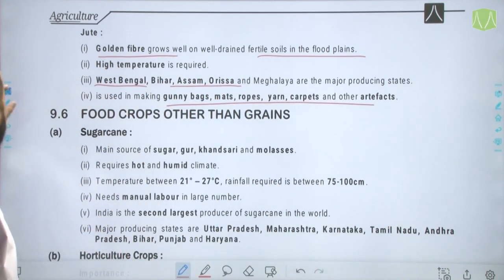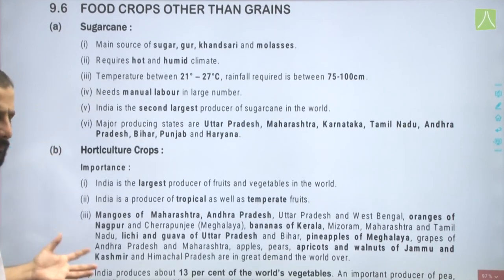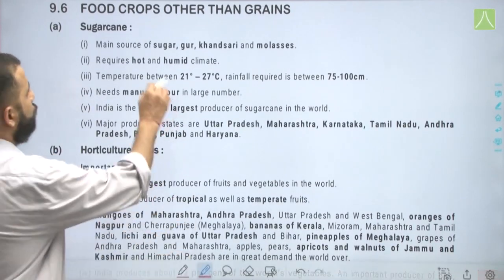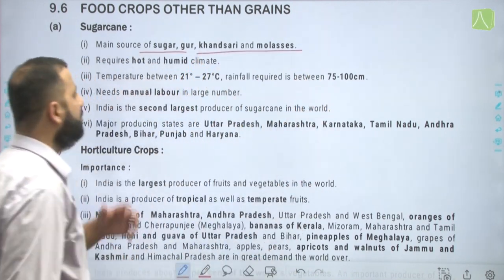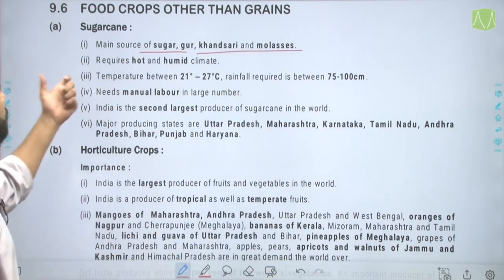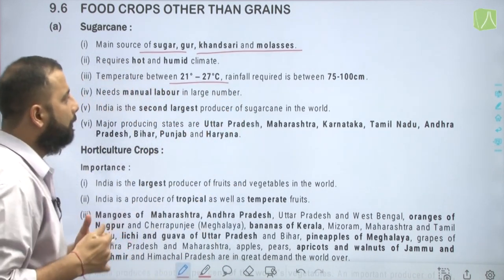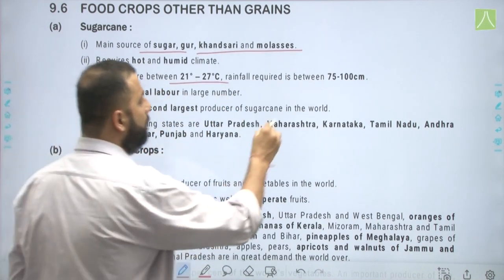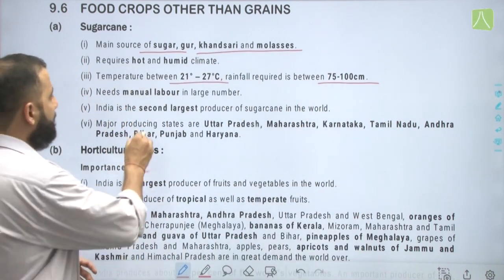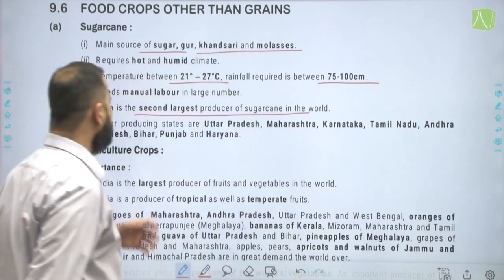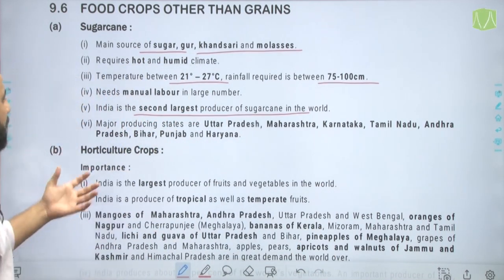Food crops other than grains — sugarcane is a major source of sugar, khandsari, and molasses. It requires a hot and humid climate with temperatures between 21 to 27 degrees Celsius and rainfall between 75 to 100 centimeters. It needs manual labor in large numbers. India is the second largest producer of sugarcane. Major producing states are Uttar Pradesh, Maharashtra, Karnataka, Tamil Nadu, Andhra Pradesh, Bihar, Punjab, and Haryana.